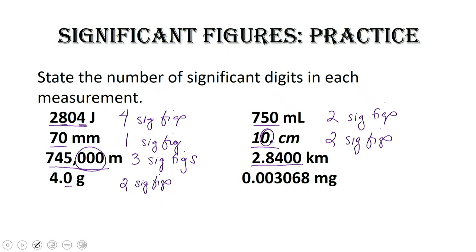2.8400 kilometers: we've got trailing zeros again, but the qualifier is our decimal place. If there's a decimal, all trailing zeros are significant — so we have five sig figs. And the very last question: we've got three leading zeros, then a zero that's in between non-zero digits. Leading zeros are always not significant, but the zero sandwiched in between actual significant digits is significant — so we have four sig figs here.